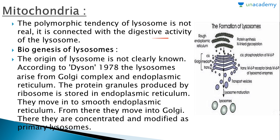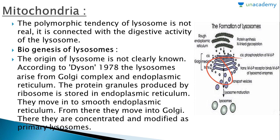Regarding the biogenesis of lysosomes, the origin of the lysosome is not clearly known. According to Dyson in 1978, lysosomes arise from the Golgi complex and endoplasmic reticulum. The protein granules produced by ribosomes are stored in the endoplasmic reticulum, then move into the smooth endoplasmic reticulum, and from there into the Golgi body, where they are concentrated and modified as primary lysosomes.